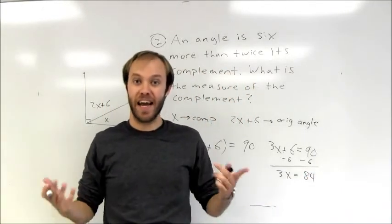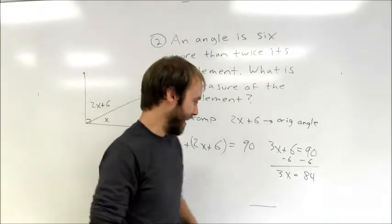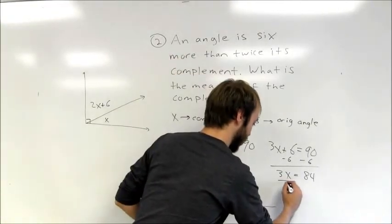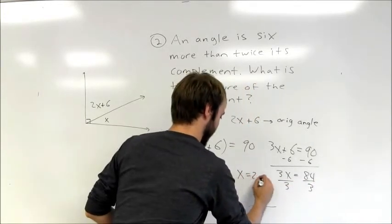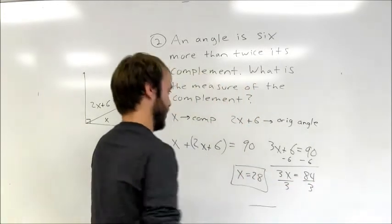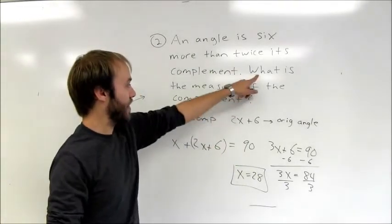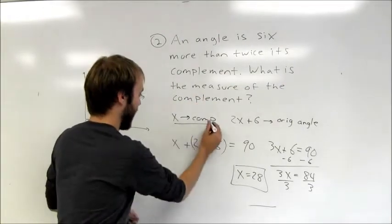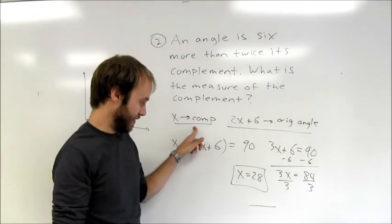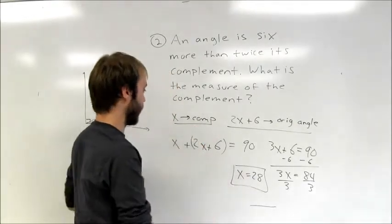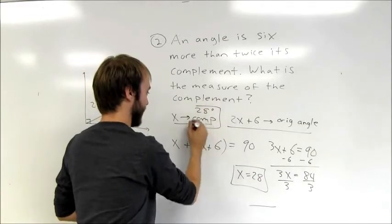Dividing 84 by 3, I find that x equals 28. At the end, always go back and check whether you answered the question. This problem asked for the measure of the complement, and since I let x represent the complement, x equals 28 degrees is my solution.